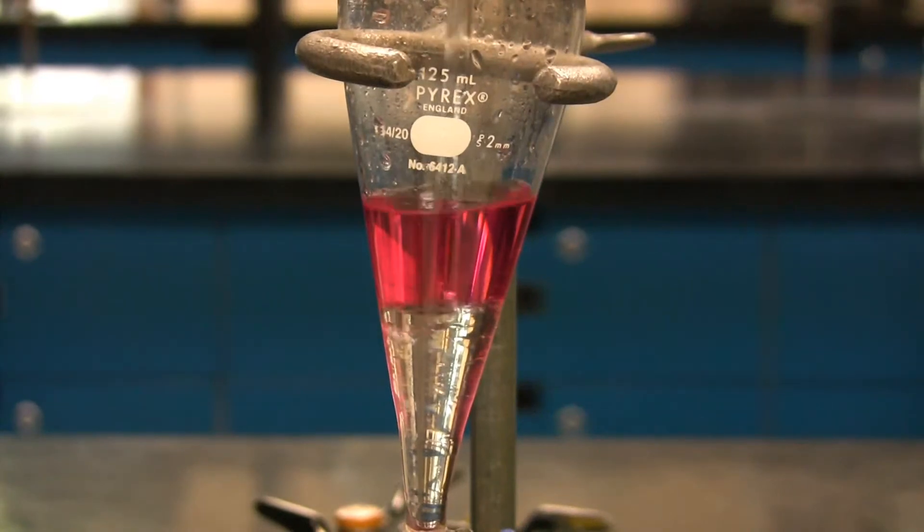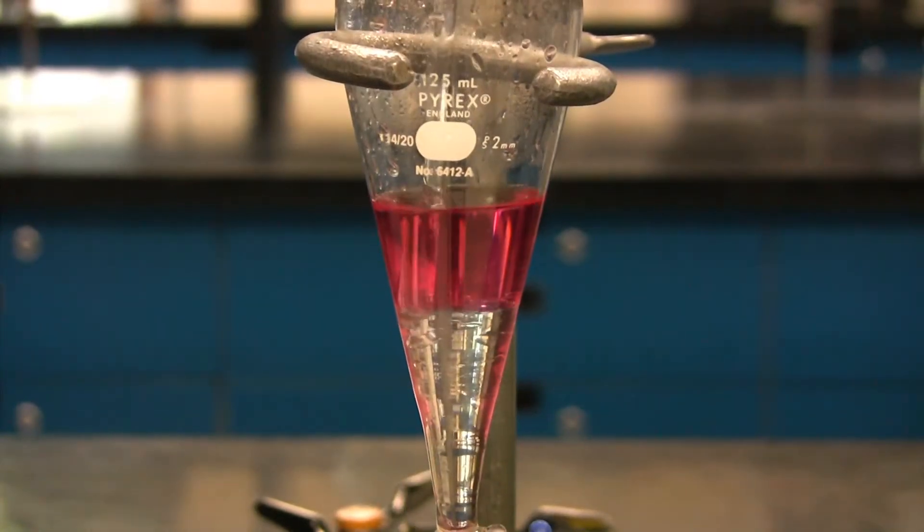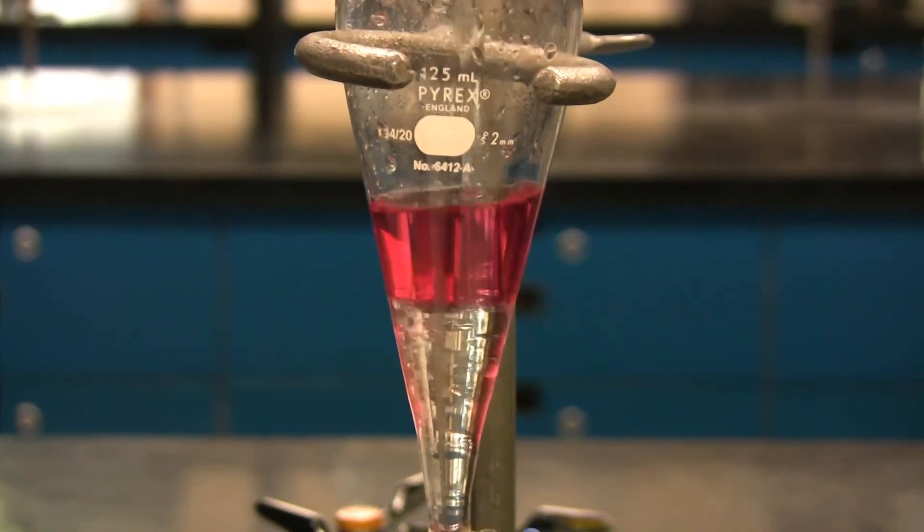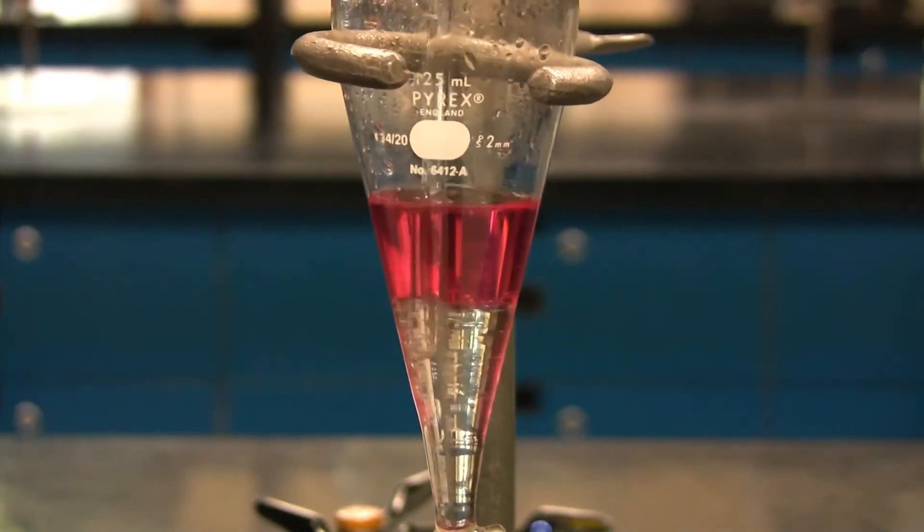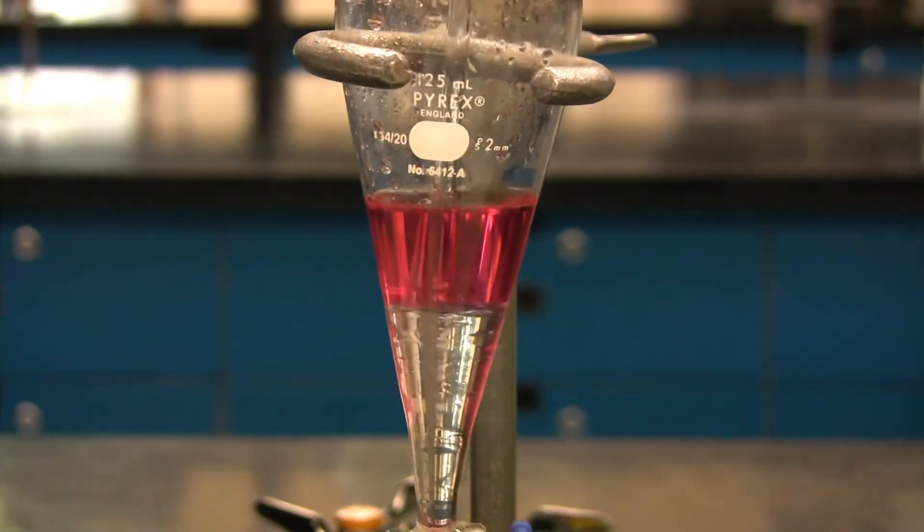Sometimes an emulsion can form between the two layers. If this occurs, take a glass stir rod and scratch the side of the glass near the two layers to break up the emulsion.